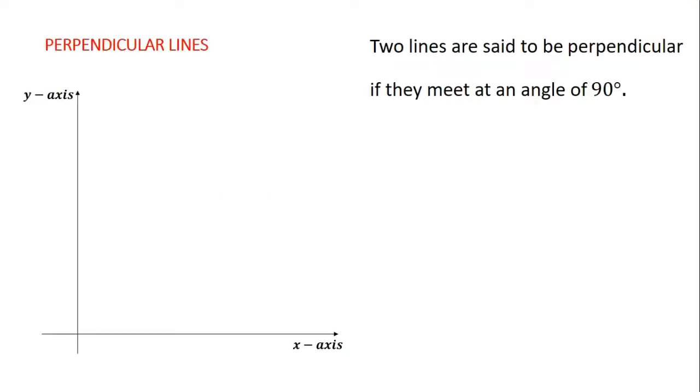Perpendicular lines. In the videos on mensuration and plane geometry, we learned that two lines are said to be perpendicular if they meet at an angle of 90 degrees. So if line CD and line AB meet at an angle of 90 degrees or if they meet at right angle, then line AB and line CD are said to be perpendicular to each other.